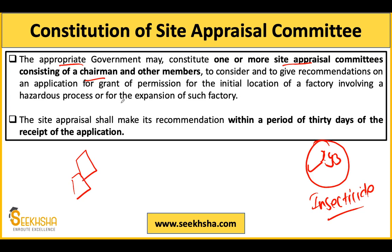When my application reaches the committee, the code specifies that within 30 days, the Site Appraisal Committee must pass its recommendations. If the committee does not give its recommendation within 30 days, it will be taken as recommended — meaning the application will be automatically accepted.